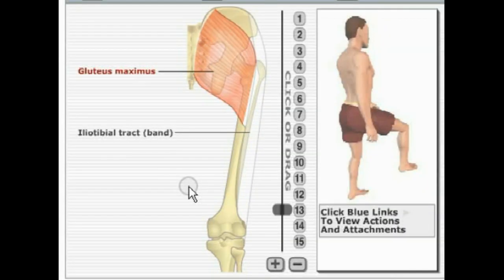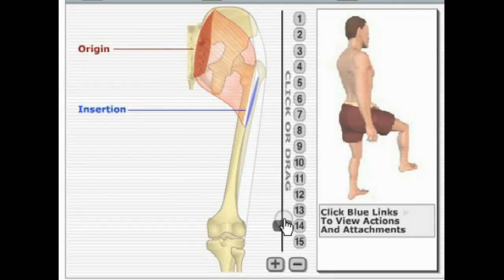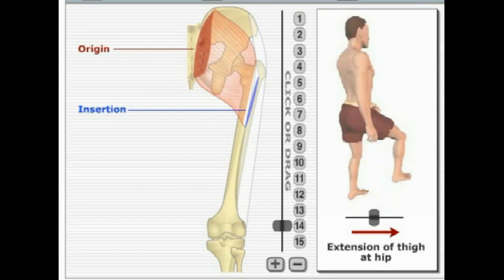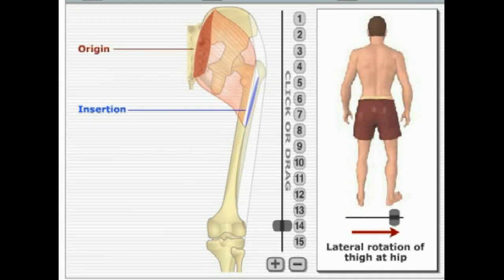Next, we're going to talk about the muscles of the hip. First is gluteus maximus. It originates on the posterior superior iliac spine of the ilium, abbreviated as PSIS, and inserts into the gluteal tuberosity of the femur. The action it performs is extension of the thigh, and it also laterally rotates the thigh.